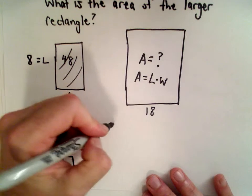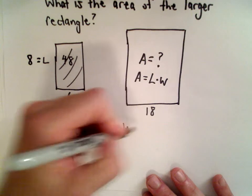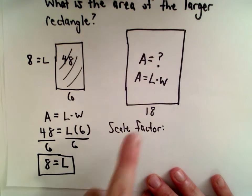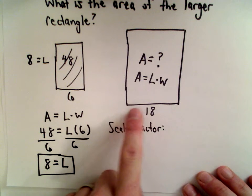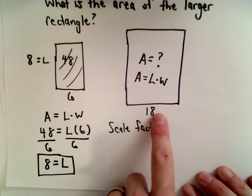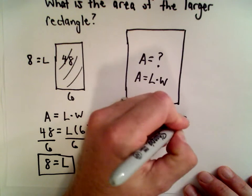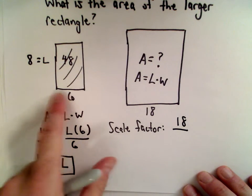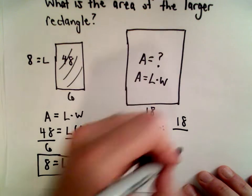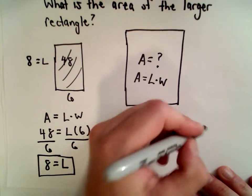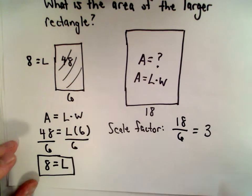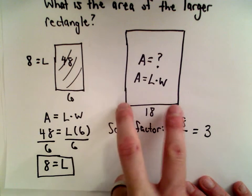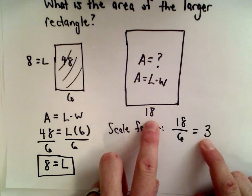Now I'm also going to figure out the scale factor. So to figure out the scale factor, I'm going to take the smaller side on the large rectangle, which has a value of 18, and I'm going to divide that by the shorter side on the smaller rectangle, which is 6. 18 divided by 6, that's going to give us 3. So the idea is, when you look at smaller side to smaller side, it goes up by a factor of 3.